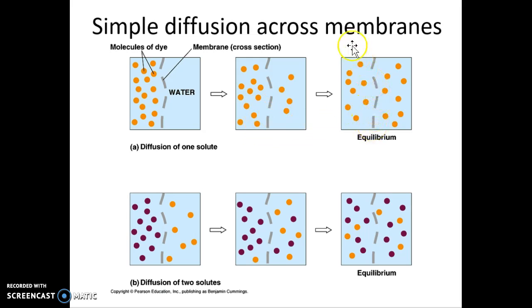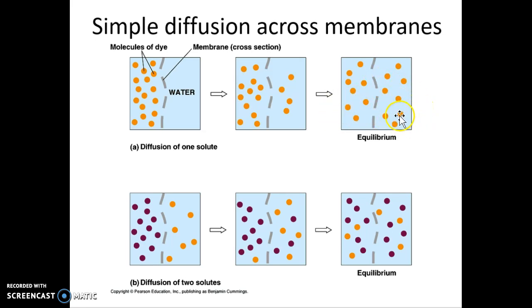Eventually there's an equal number of molecules on both sides — this is equilibrium. Molecules continue to move across from left to right and right to left. Note how these molecules get across: they go through those little holes in the membrane.